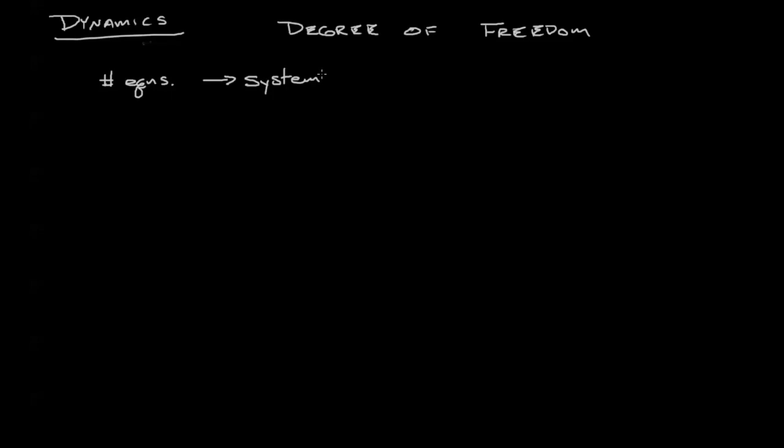If we want to understand exactly what is a degree of freedom, a good way to see it is how many variables do we need to know in order to completely describe the system.